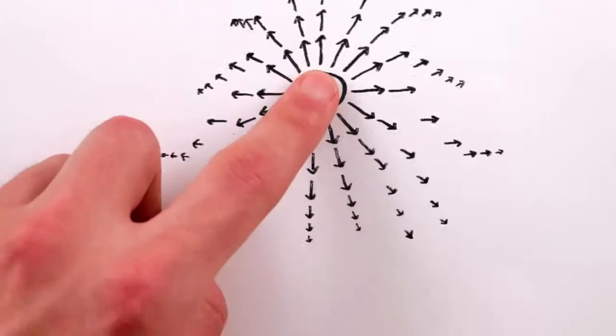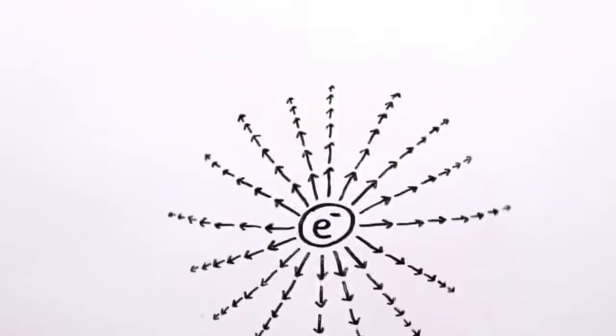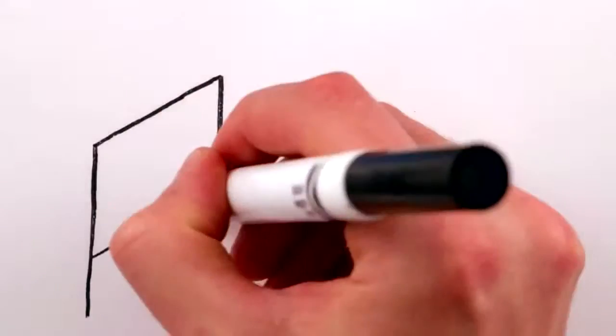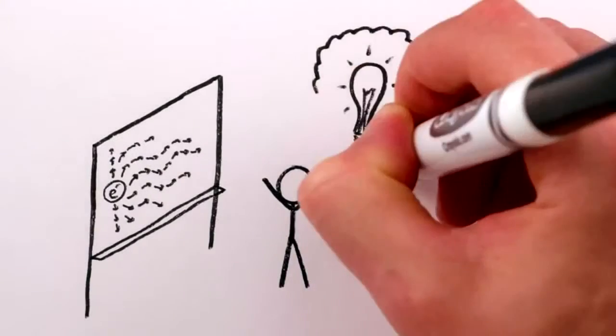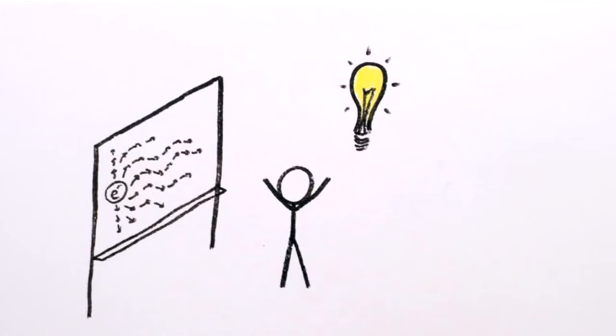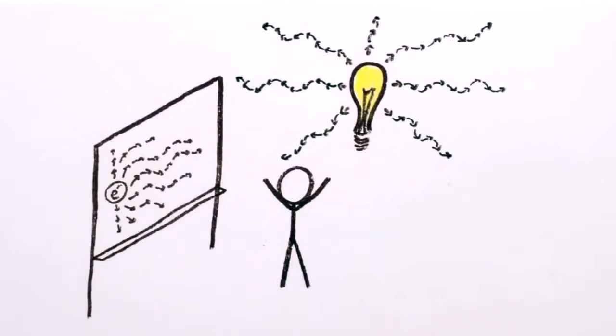But if you shake an electron around, it'll send out ripples through the field, like waves on a lake. The awesome thing that JC realized was that these electromagnetic ripples, or waves, travel at the same speed as light. In fact, they are light. JC had discovered that light is an electromagnetic wave.